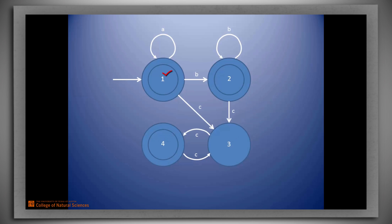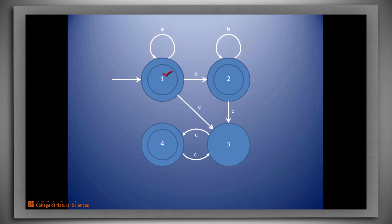States 1, 2, and 4 are all accepting. State 1 corresponds to having seen only A's, including no A's. State 2 corresponds to seeing some number of A's, including none, but at least one B. State 4 represents an even number of C's. State 3 is not accepting since it represents an odd number of C's.